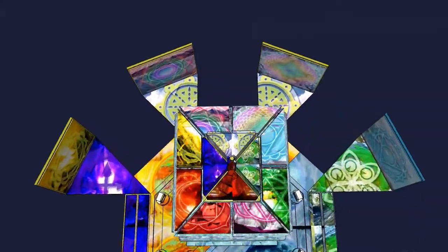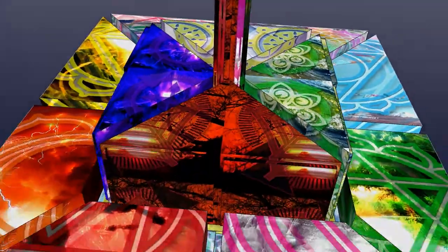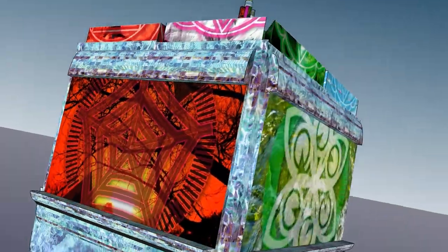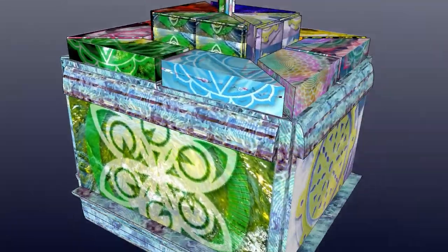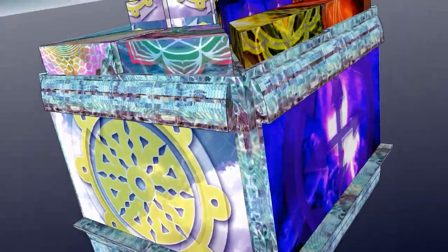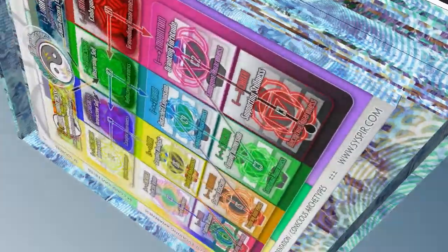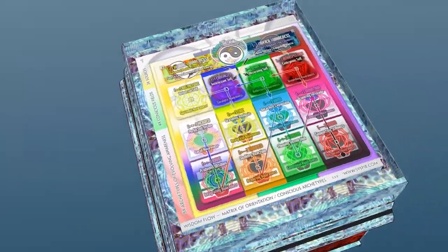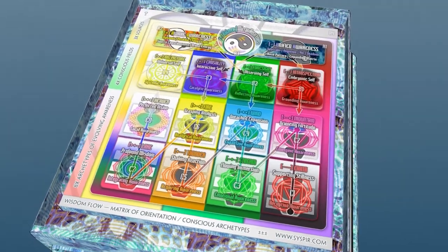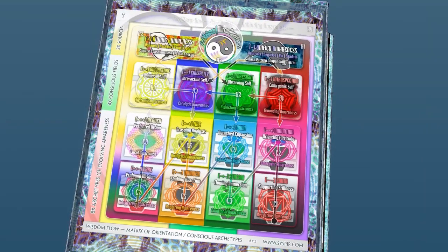Here are the Fifteen Fields of Natural Balance: Introspection, Foresight, Big Picture, and Causality. Four Pillars of Wisdom Flow in the Matrix of Orientation and Conscious Archetypes.